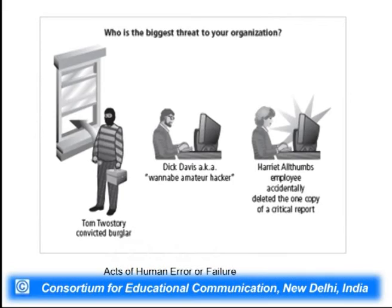In the slide showing acts of human error, we can see pictorial representations including Tom, a two-story convicted burglar and amateur hacker, as well as Harriet, an employee who accidentally deleted the one copy of a critical report. As the example illustrates, data can be accidentally deleted by an employee whether or not they know the data is important.